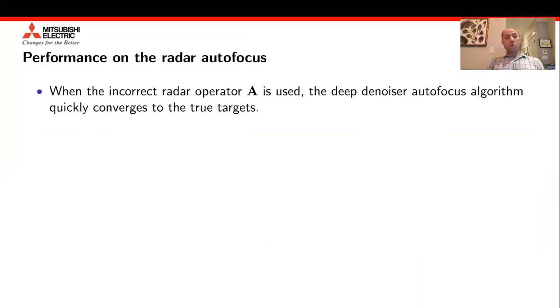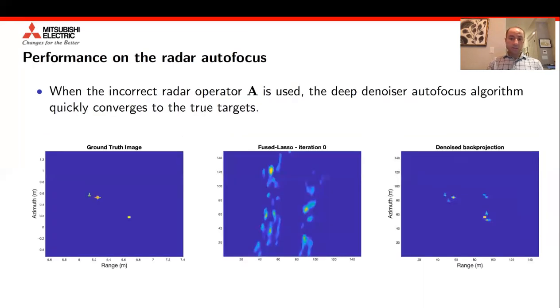We incorporate this idea into the alternating minimization approach. What we're showing over here is the reconstruction compared to the fused lasso, our previous work. This is for the first iteration, and as the iterations progress, we can start seeing the network reconstructed. This is another target configuration. The network or our algorithm is able to reconstruct the target positions, whereas the fused lasso has a lot of spurious noise.